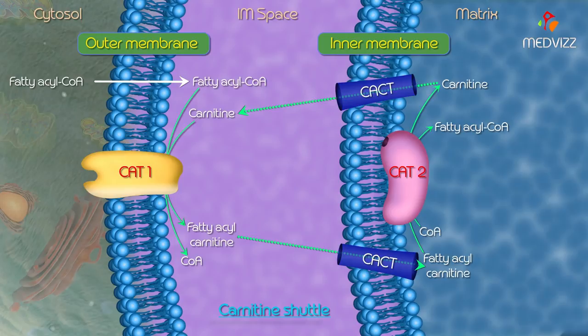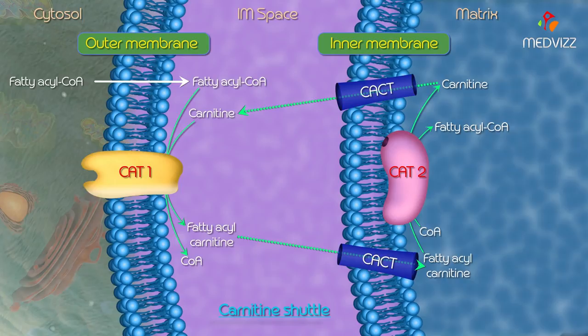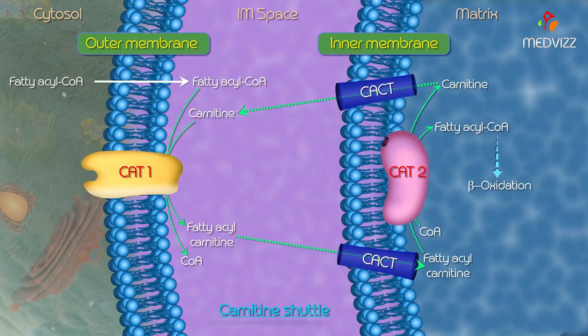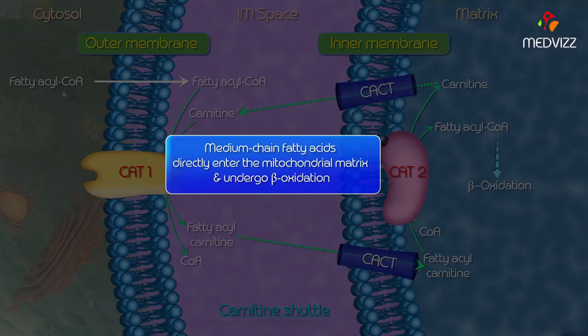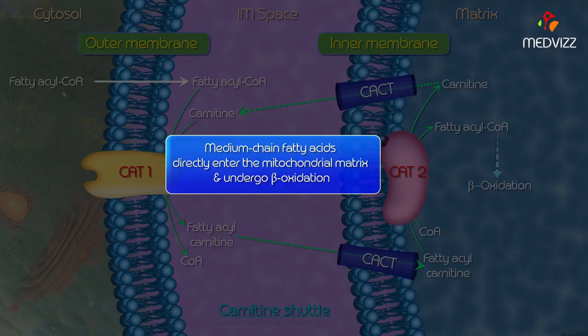Whatever fatty acyl CoA is brought into the mitochondrial matrix is now ready for beta oxidation proper. Medium chain fatty acids can directly enter the mitochondrial matrix because they do not depend on the carnitine shuttle to undergo beta oxidation.